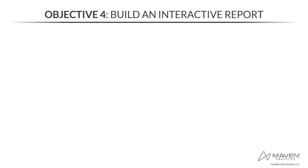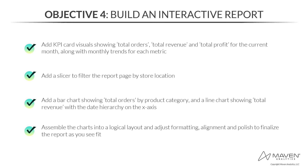It's time for the fourth and final objective: creating the interactive report. First, we'll add KPI card visuals for total orders, total revenue, and total profit for the current month along with the monthly trend for each metric. After the KPI cards, we'll add a slicer visual to filter by store location. Then we'll add a bar chart showing total orders by product category and a line chart showing total revenue with the date hierarchy on the X axis. Finally, we'll assemble the charts into a logical layout and add formatting and polish.